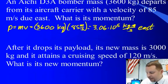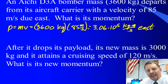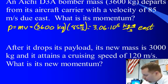After it drops its torpedo, its new mass is 3000 kilograms, and it obtains a cruising speed of 120 meters per second. What is its new momentum?